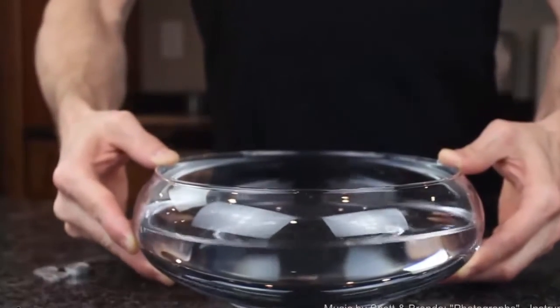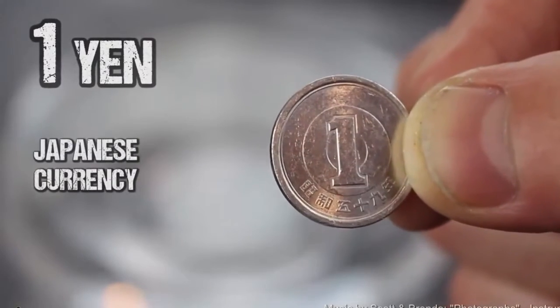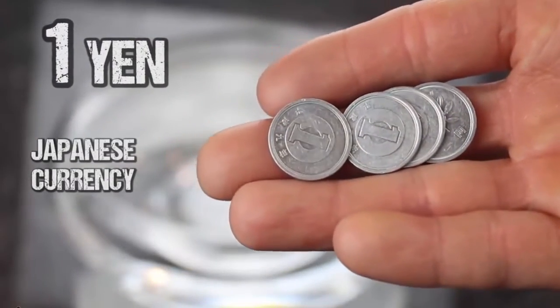For this demonstration, you're gonna need a bowl of water and a handful of 1 yen coins. 1 yen coins are kinda like Japanese pennies, and there's a good chance you can get some if you're really nice to your neighborhood Japanese exchange students.